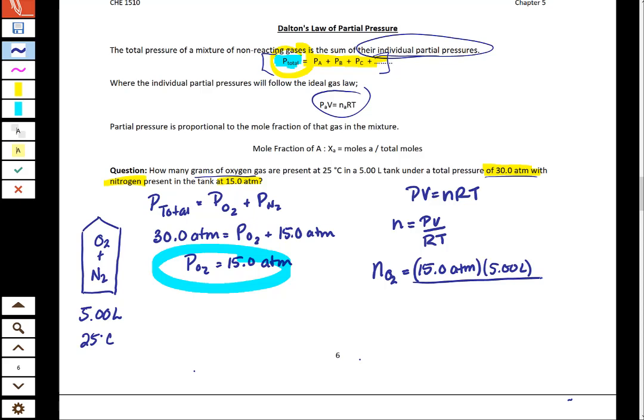We're going to divide this by R which is 0.0821 liters atmospheres per mole Kelvin. And by now we've done so many ideal gas law problems that we can just do the 273.15 plus the 25 degrees Celsius in our head to get 298 Kelvin.